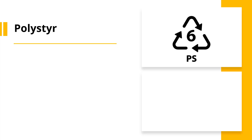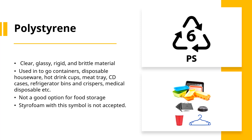Number 6 is given to polystyrene. Polystyrene is a clear, glassy, rigid and brittle material. It is used in carry-out containers, disposable housewares, hot drink cups, meat trays, CD cases, refrigerated bins and crispers, and medical disposables.